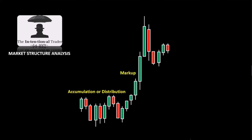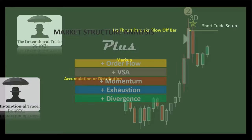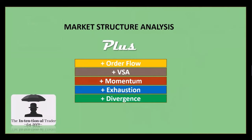With these tools you can see the accumulation and distribution, the markup, and be ready for those upthrust or blowback bars — because that's when we enter the trade. Now I'm going to show you how we add to the market structure analysis: how we add order flow, volume spread analysis, momentum, exhaustion, and divergence to the structure so we can better understand what's likely to happen next.